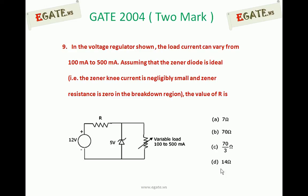The correct value of R is D, 14 ohms. We see the details now.